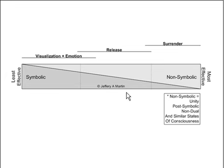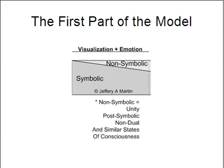These other sections — the second and third section — are going to be covered in later sessions. If we expand out and just look at this first part of the model, something becomes very obvious about it: it deals primarily with symbolic experiences.